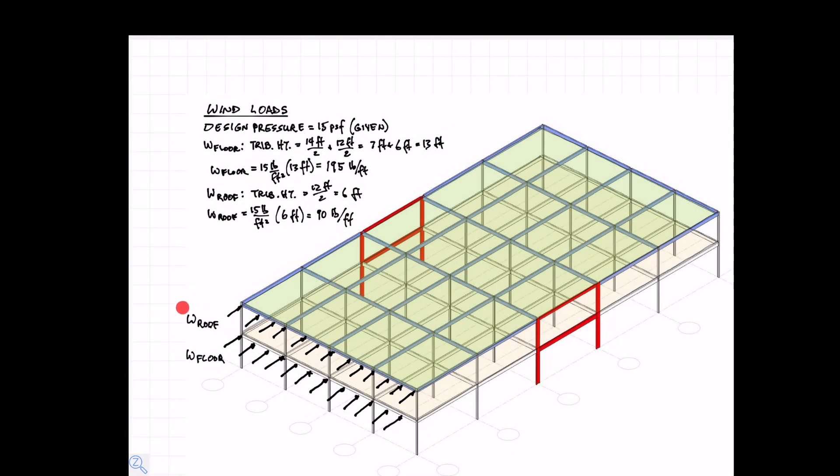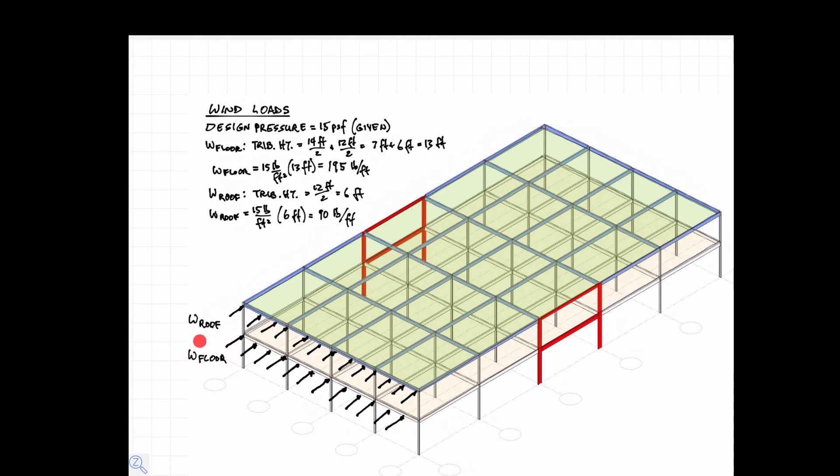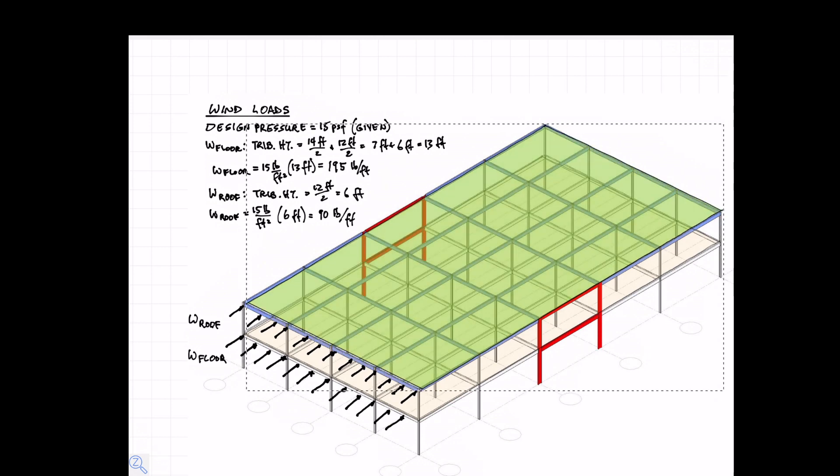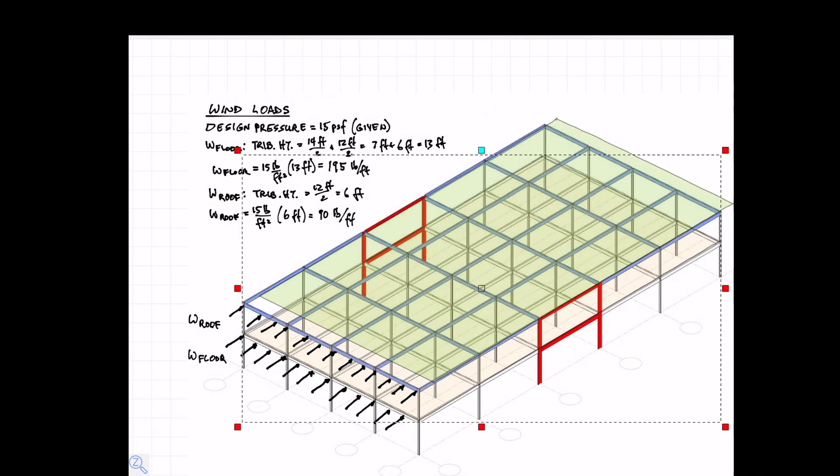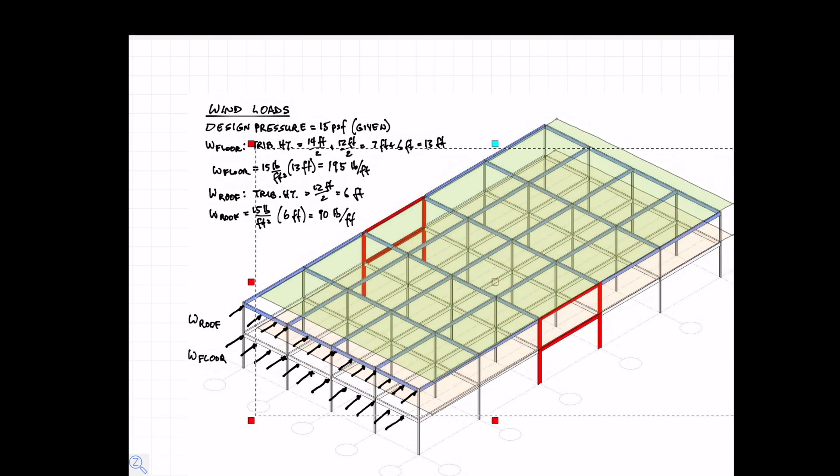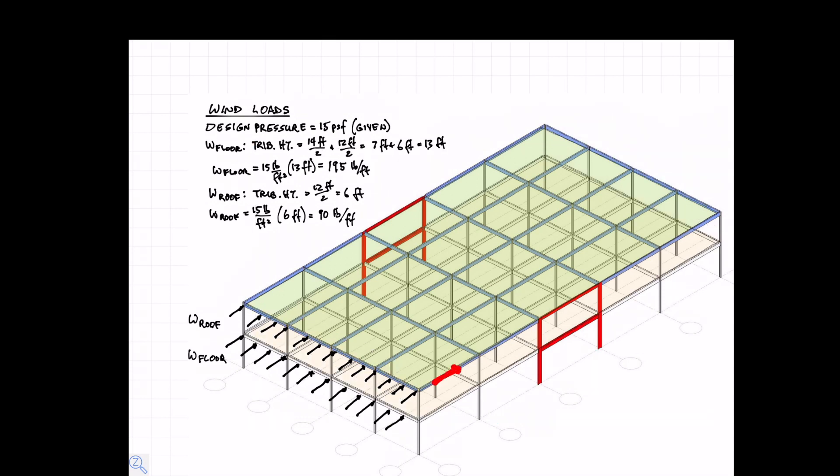Now those linear forces along the roof here and also along the floor here are attempting to slide the horizontal diaphragm shown in light green here on the roof and in light beige on the floor. They're trying to displace those but they can't because the system is all tied together. The forces are then transmitted through the diaphragm until they reach the rigid frame.